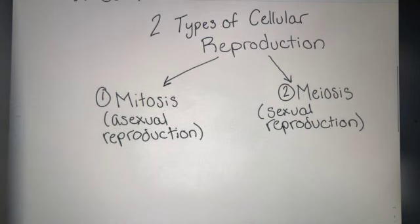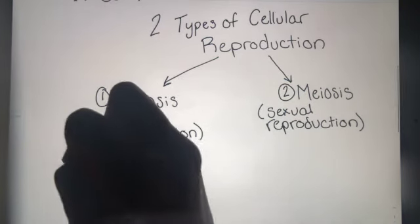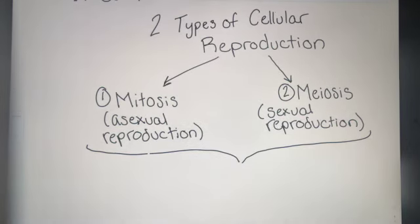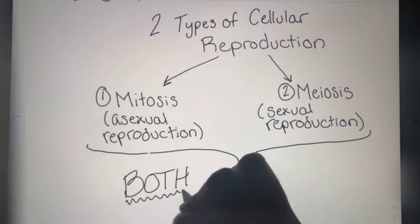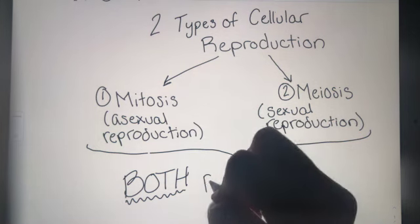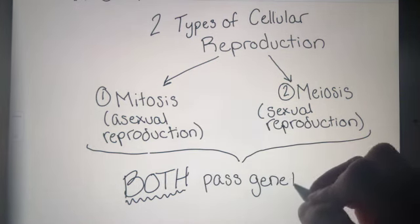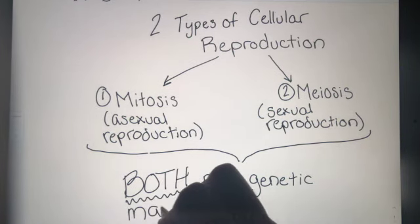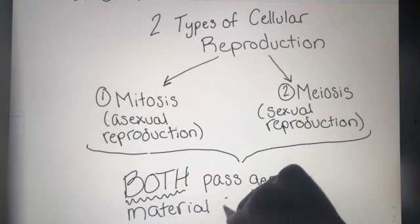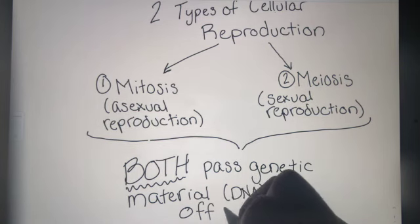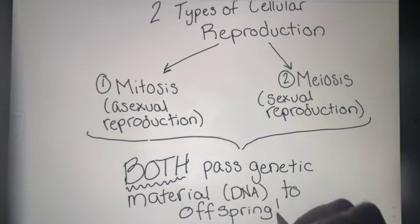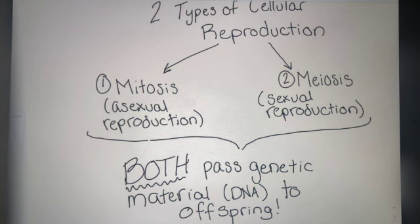Even though there are two types of cellular reproduction, both of them — it doesn't matter which one you look at — both of them pass genetic material. When you see 'genetic material,' you can think DNA. So regardless of the type, whether we have asexual reproduction or sexual reproduction, both have the same sort of end goal: genetic information in the form of DNA is going to be passed to their offspring.